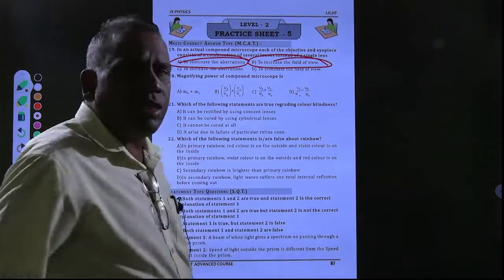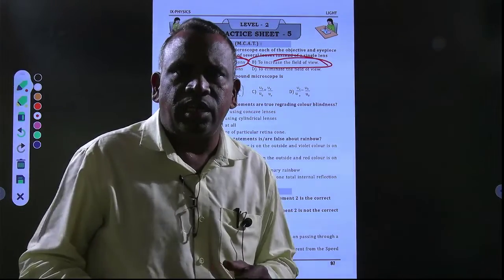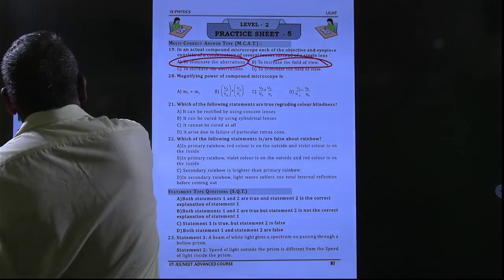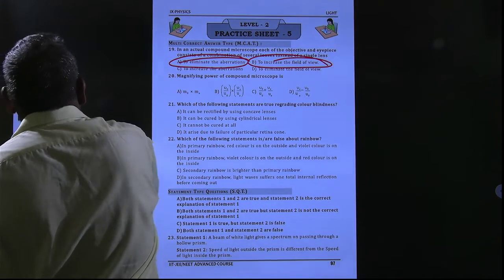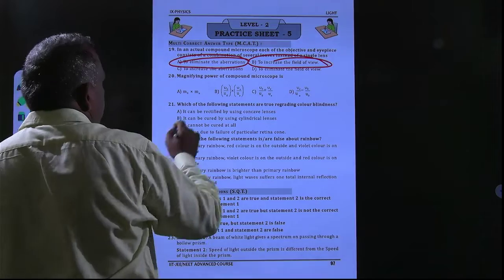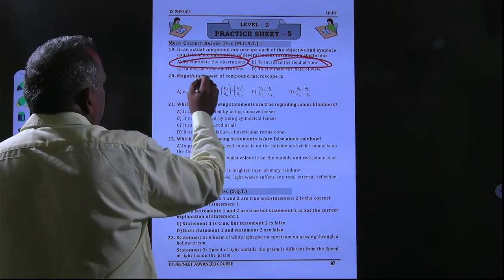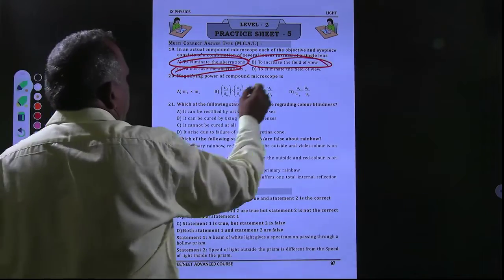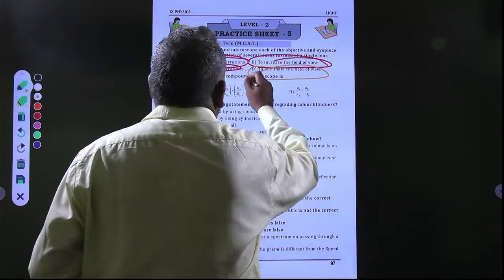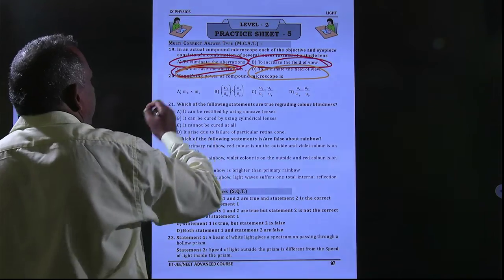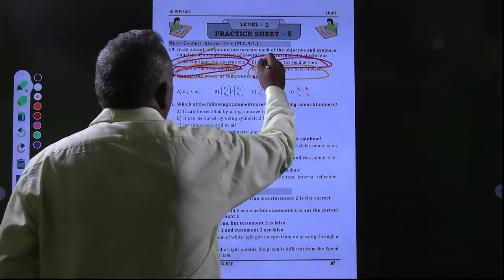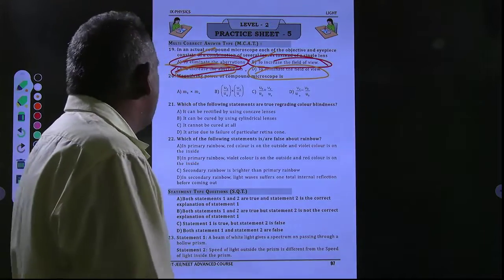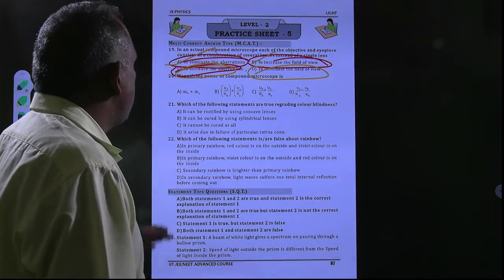Using two lenses also increases the field of view, which is another important benefit. The remaining two options — to increase the aberrations and to eliminate the field of view — are both wrong answers. So the correct answer is option A and option B. Moving to the 20th question.